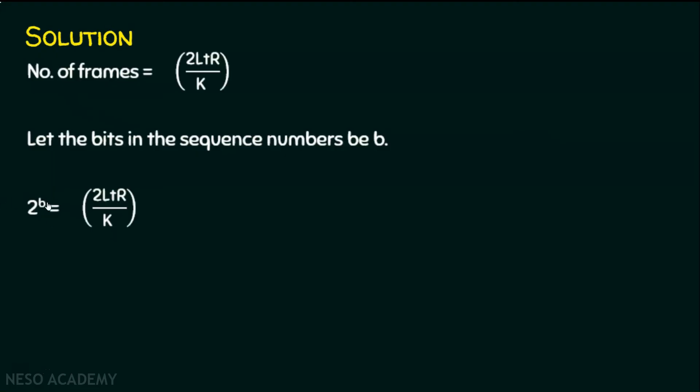And this b is the minimum number of bits. And how to find this b or how to extract this b? It's very simple. Let's take log to the base two on both the sides. We get b. When we take log on both sides, we get b is equal to log to the base two, 2Ltr by k. And we found the answer for this problem.